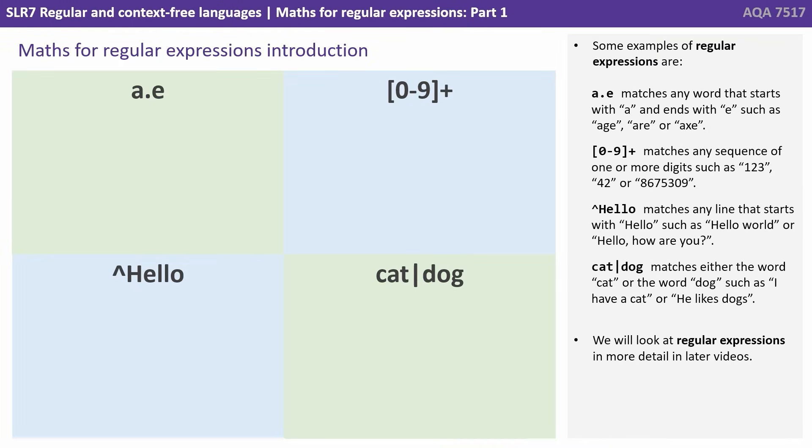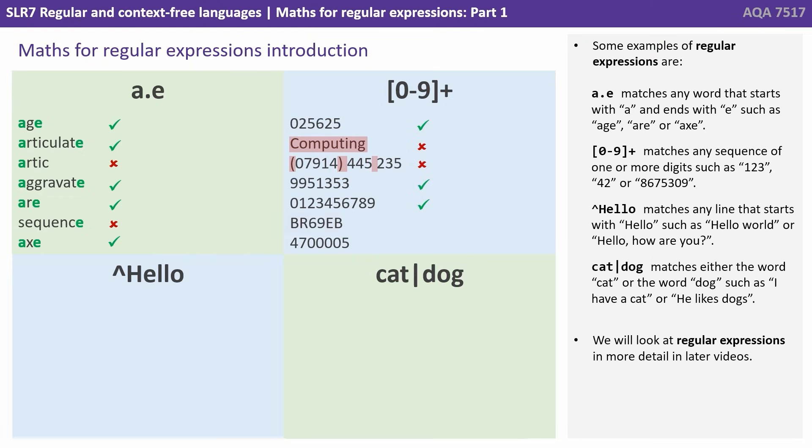Some examples of regular expressions are shown here. A dot E matches any word that starts with A and ends with E, such as age, articulate or axe. This would match any sequence of one or more digits, such as 123, 42 or 5675309.